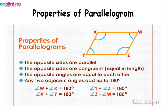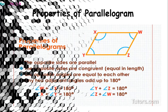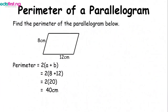The third property is that opposite angles are equal to each other — angle X equals angle Z, and angle Y equals angle W. Finally, any two adjacent angles add up to 180 degrees: angle X plus angle Y equals 180°, angle X plus angle W equals 180°, angle W plus angle Z equals 180°, and angle Y plus angle W equals 180°.